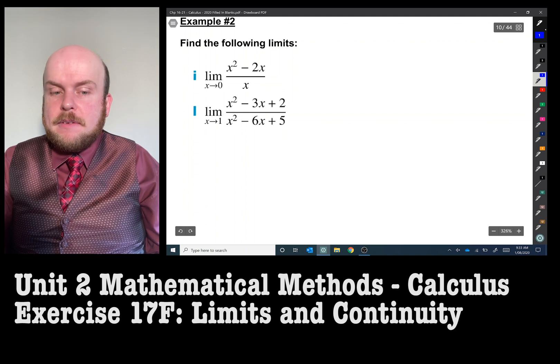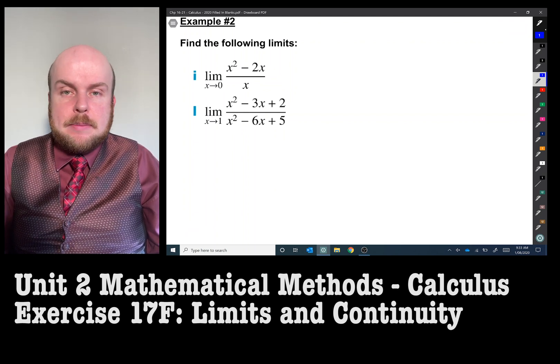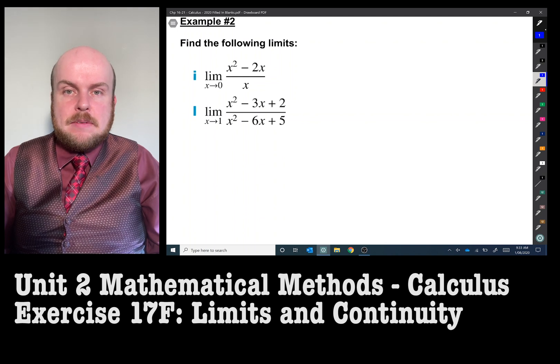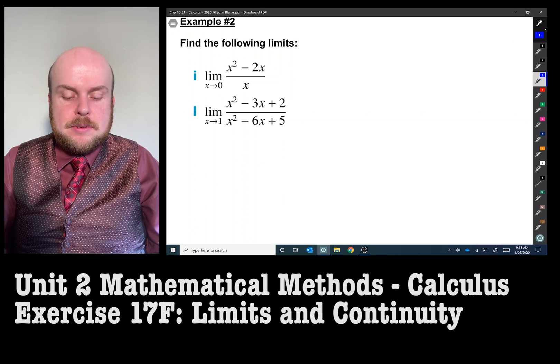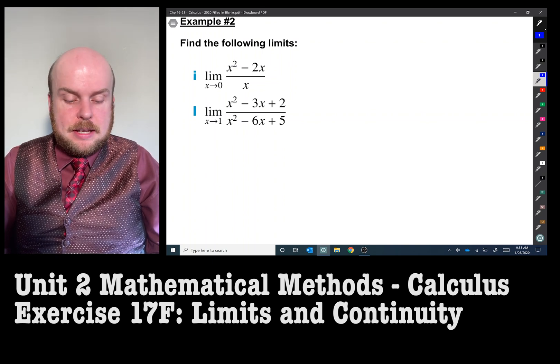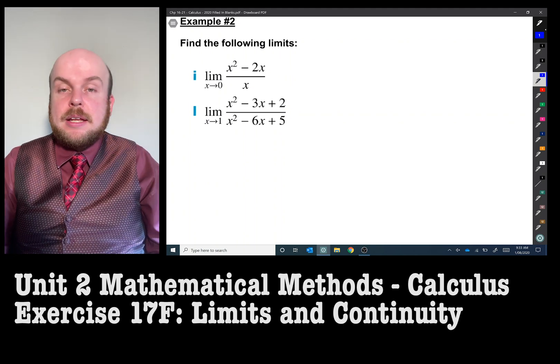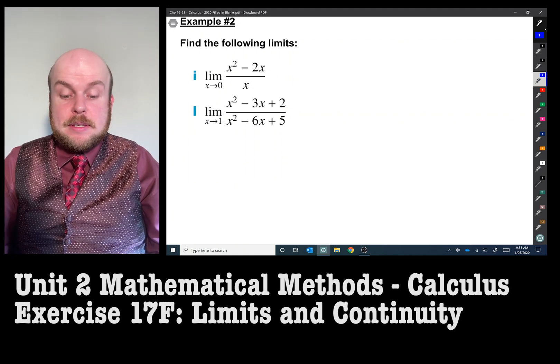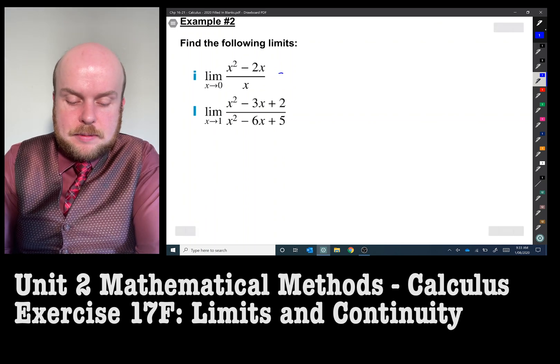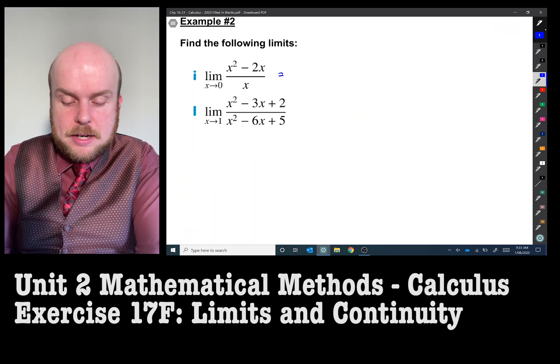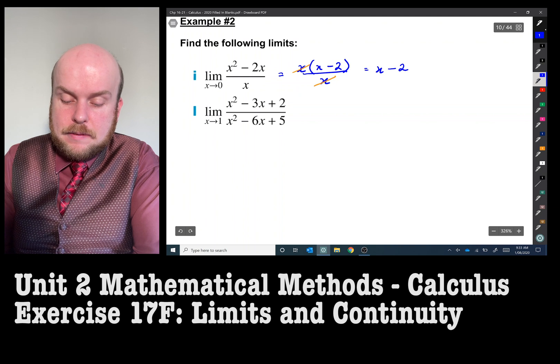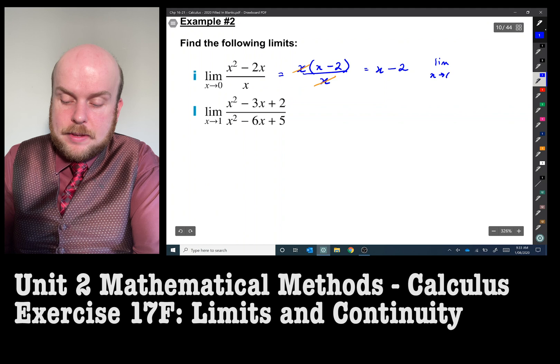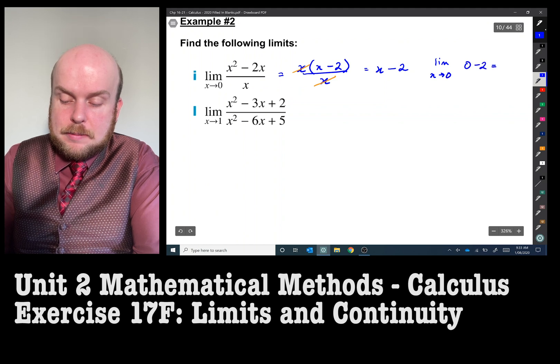Example 2: Find the following limits. Now often when we're finding a limit you think just to substitute the number that's underneath the limit sign, but you'll notice if I do that I'll get 0 take away 2 over 0 in that first example. So we're going to need to do a little bit of simplification. So we'll take a common factor out of that numerator and then we can cancel those x's out and so therefore the limit as x approaches 0 will be 0 take away 2 will be negative 2.